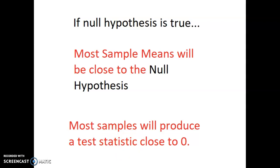This is because we always trust that we're gathering a good random sample, so we're never going to assume we got an unusual sample that's not representing the population well. We trust our data and our sample, which is why we reject the null hypothesis. We could be wrong — we could be making an error if we got unlucky and got an unusual sample. That's when type 1 and type 2 errors come into play.